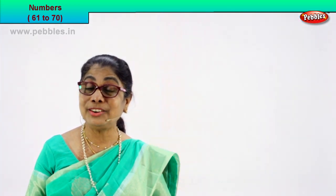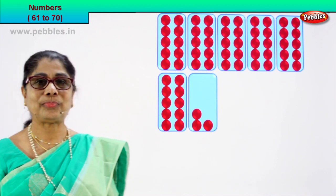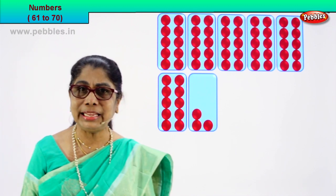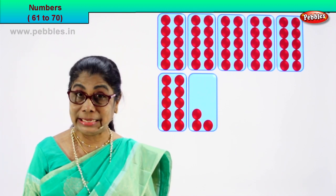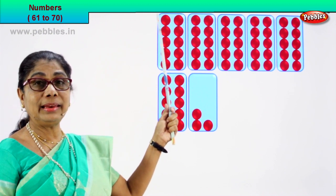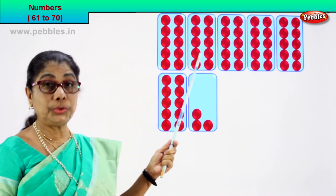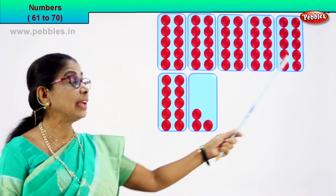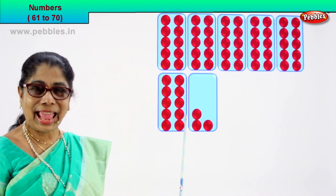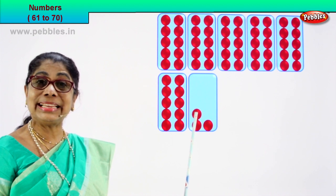Shall we take the next number? Shall we learn to count more? Look what we have. There are one, two, three, four, five and six boxes. And in each box how many do we have? We have ten each. Let's count the first box. One, two, three, four, five, six, seven, eight, nine, ten. So the first box has got ten. One ten, two tens, three tens, four tens, five tens, and six tens. What is six tens? Sixty. And three more. Sixty and three more is sixty-three.